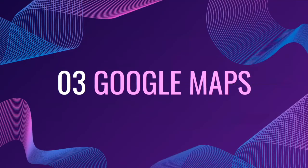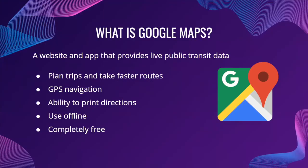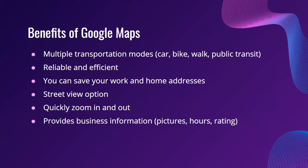Next we'll talk about Google Maps. Google Maps is both a website and an application that provides live public transit data. It also allows you to plan your trips and take the faster routes. It has GPS navigation, you can print off directions, you can use it offline, and it is also completely free. Some of the benefits of Google Maps include allowing you to view or use multiple transportation modes such as car, biking, walking, or public transportation. It's also reliable and efficient, and you can save your home and work addresses for more efficiency.